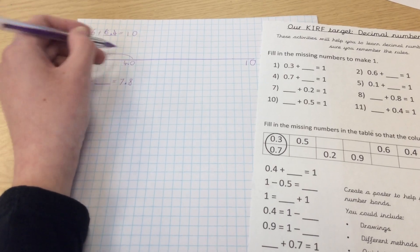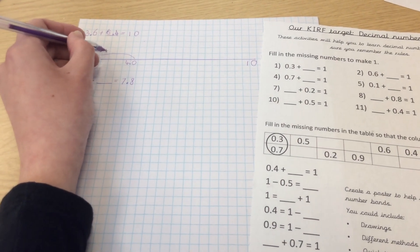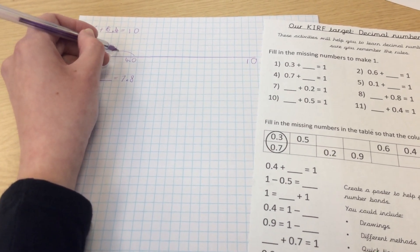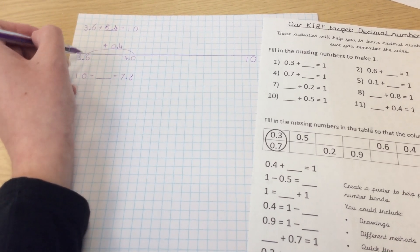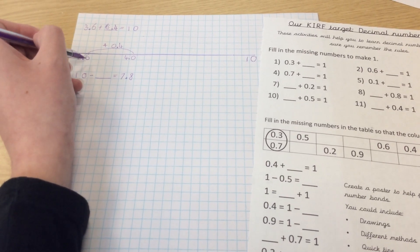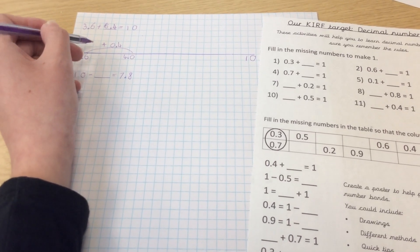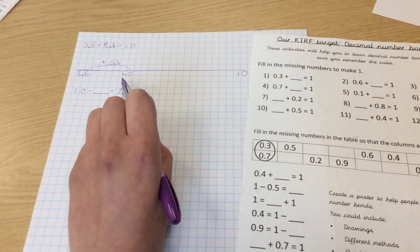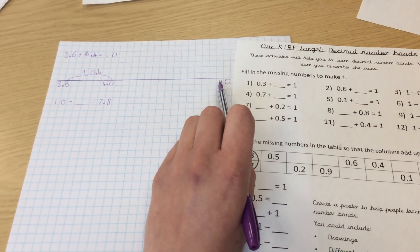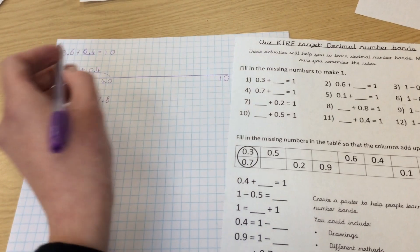To get from 3.6 to 4, I need to complete a jump of plus 0.4. That will get us from 3.6 to 4 because 6 to 10 would be 4, so we're just dividing our answer by 10.